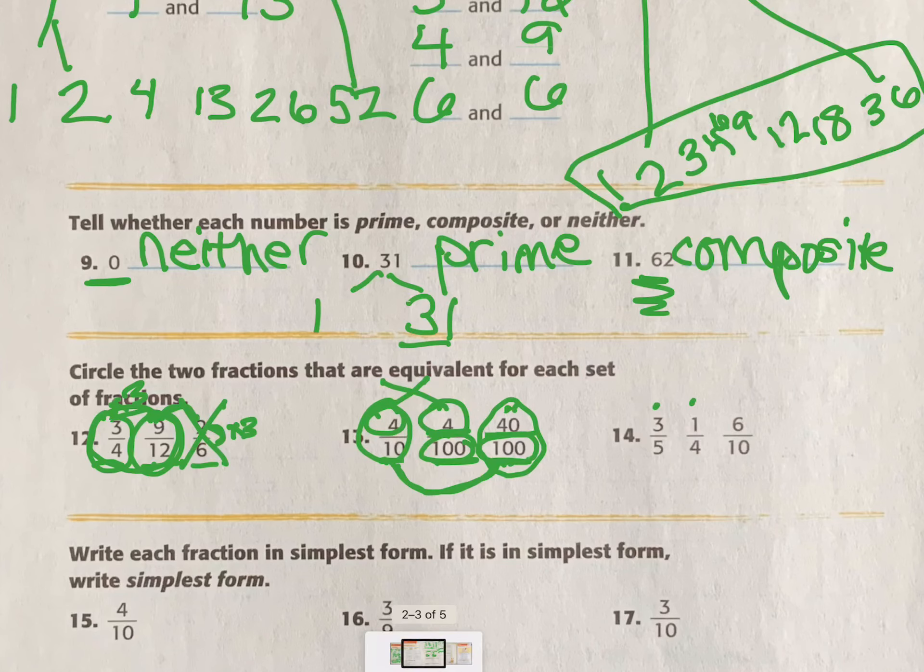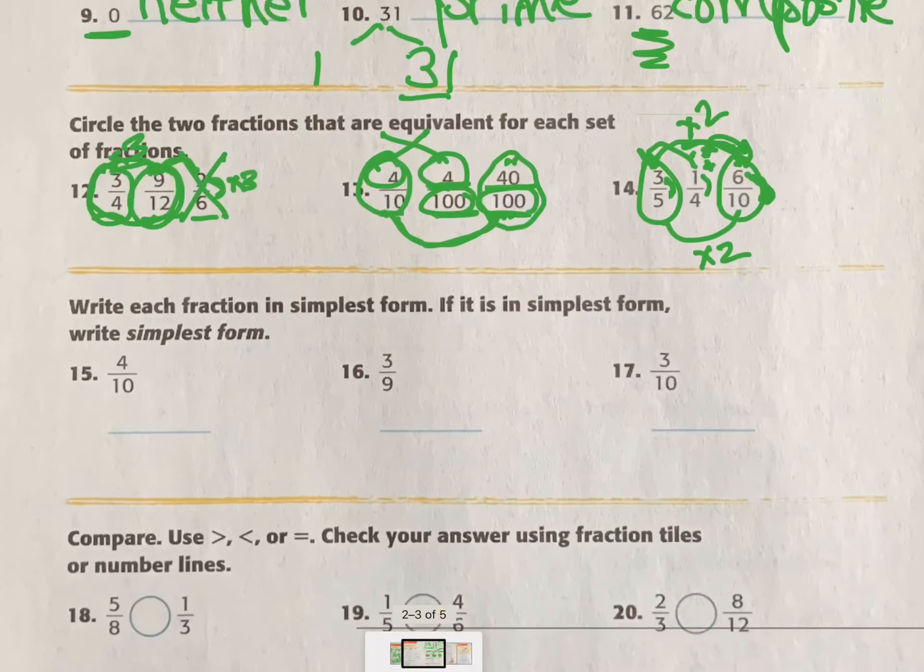Now we have 3/5, 1/4, and 6/10. Well, can I get 3 to 5 from 3 to 5? No. What about 1 to 4? Yeah, I could do times 4. What about 6 to 10? No. So this one, probably not related to that one or that one because it doesn't have the same ratio here. But can I go 3 to 6? Yeah, by doing times 2. What about 5 to 10? Times 2. So 3/5 is equivalent to 6/10.